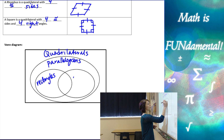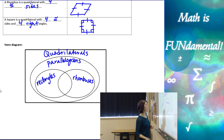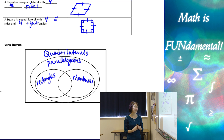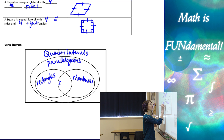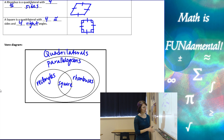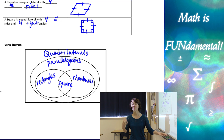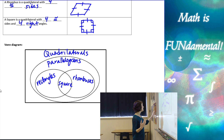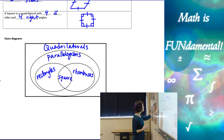We also have rhombuses within parallelograms. The intersection of rectangles and rhombuses is where we find squares. It's a nice visual representation of the relationship between all of these types of figures.